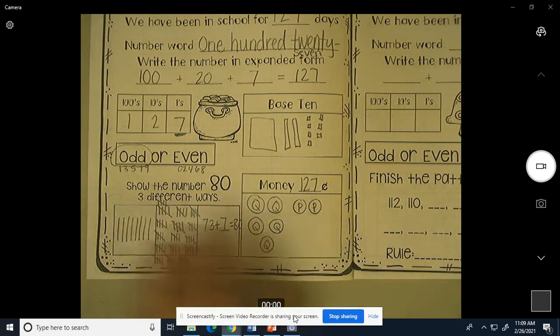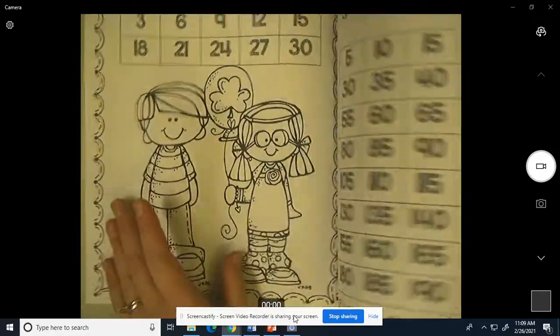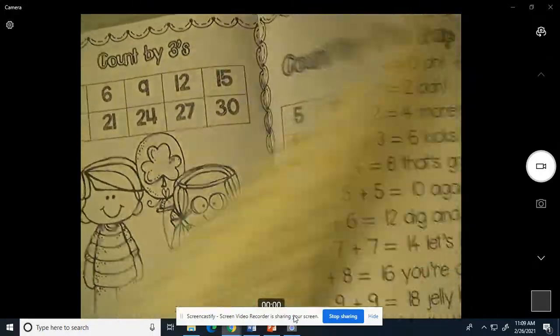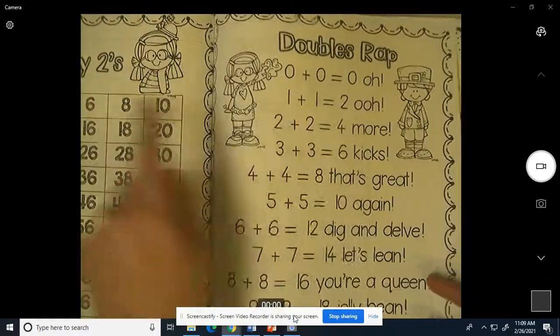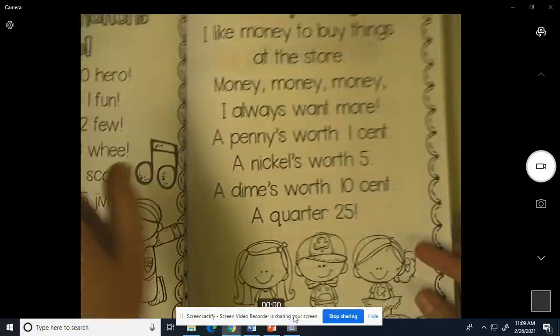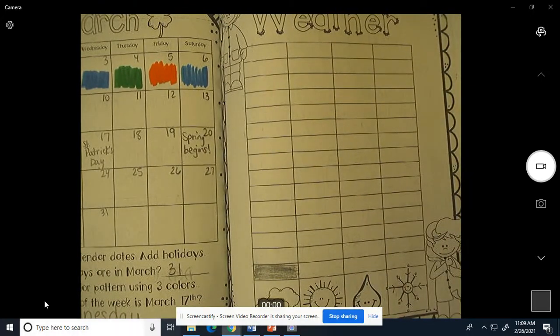All right, you will finish your calendar today by going back and reading all through these. Count by threes, count by fives, count by twos, do your doubles, do your ten combinations, your money song, and that will get you done with calendar for today.